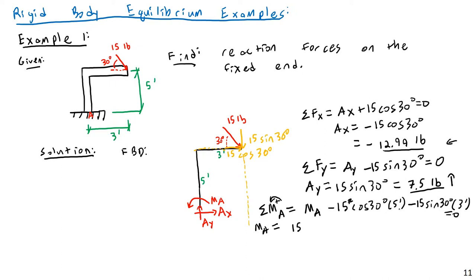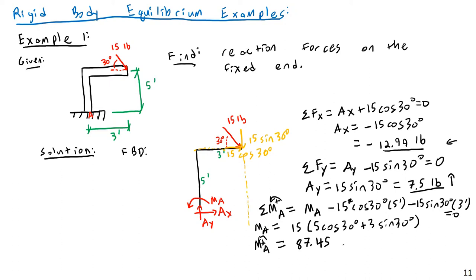So MA equals 15 times (5 cosine 30 degrees plus 3 sine 30 degrees). Throwing that into the calculator: 15 times the quantity 5 cosine 30 plus 3 sine 30 gives MA equals 87.45 pound-feet. And that completes Example 1 — a very simple system applying basic moment balance.